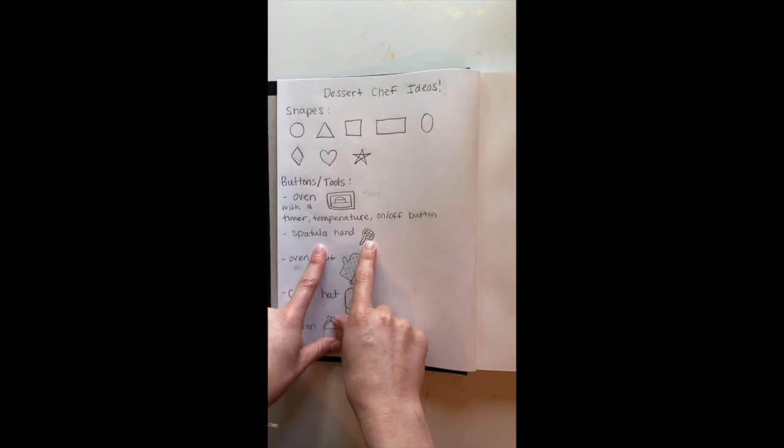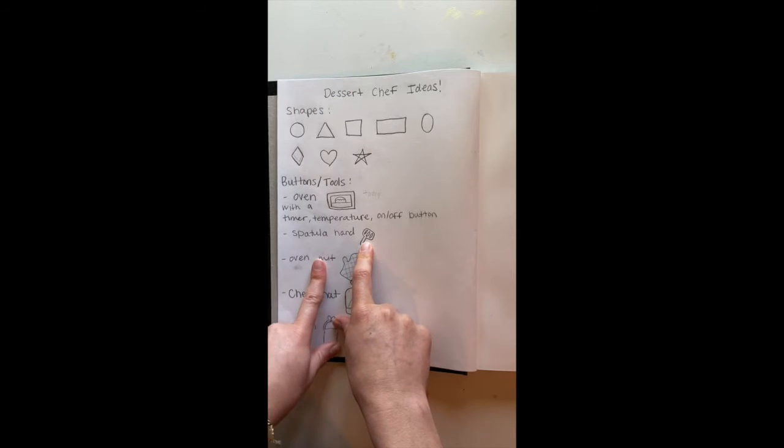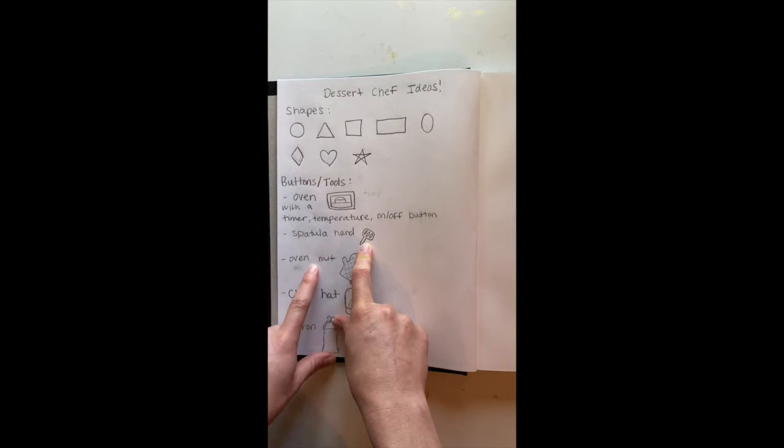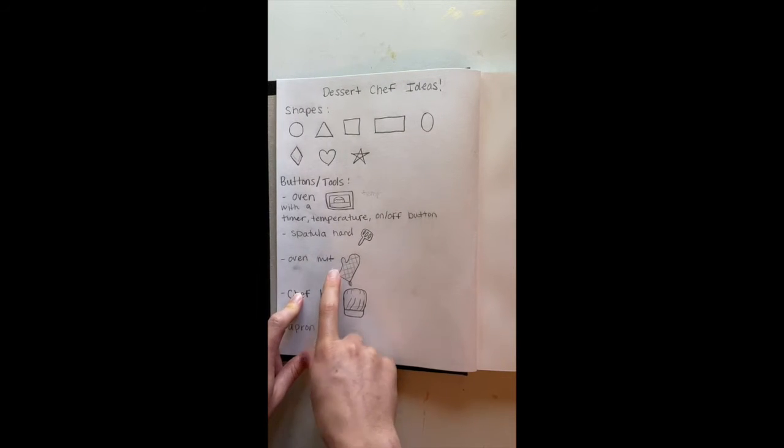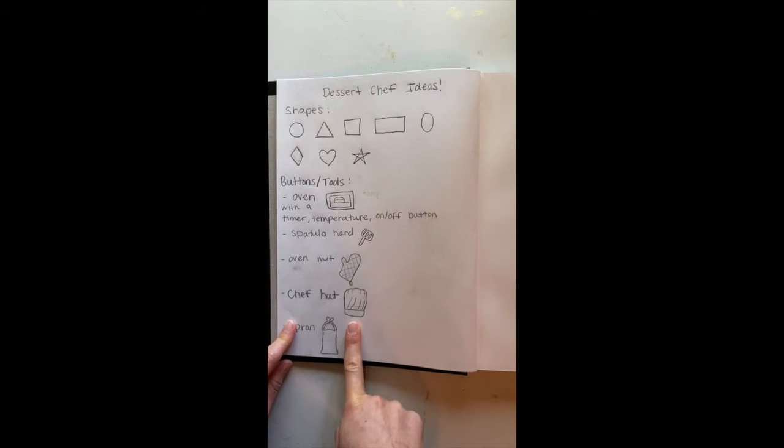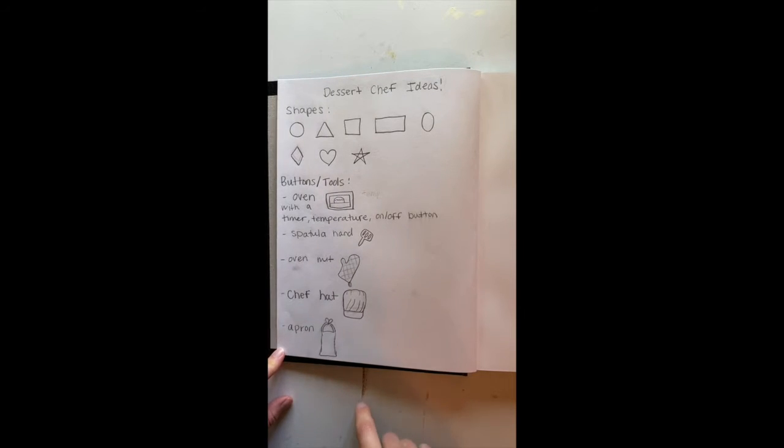I knew that I wanted my robot to have some tools to help it actually bake. So I chose to have a spatula hand. Maybe I could change that out depending on what it's going to be baking. I knew I wanted it to have an oven mitt to keep its hand safe, and definitely a chef hat so people can tell that this is a robot that cooks. I also decided that another accessory I wanted to have on my robot was an apron.